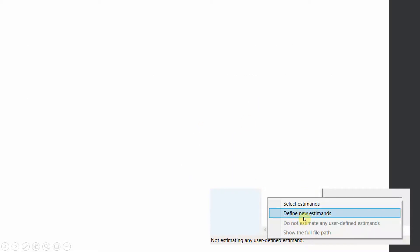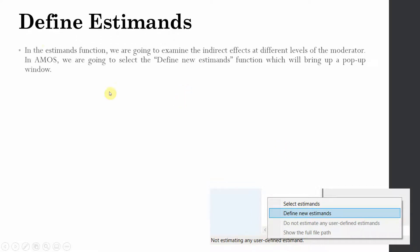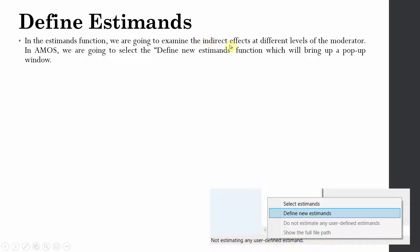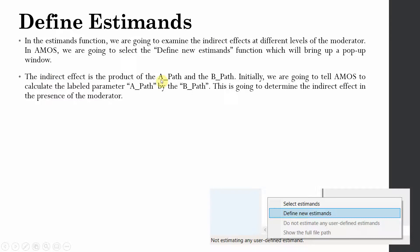The next step is to define our estimate — that is, we create a formula. In the estimates function, we are going to examine the indirect effects at different levels of the moderator. We create different estimates to identify the indirect effects when role ambiguity is high and when role ambiguity is low. In AMOS, we select 'define new estimates' to do this. The indirect effect is the product of the A path and the B path — we tell AMOS to calculate the labeled A path multiplied by the B path.